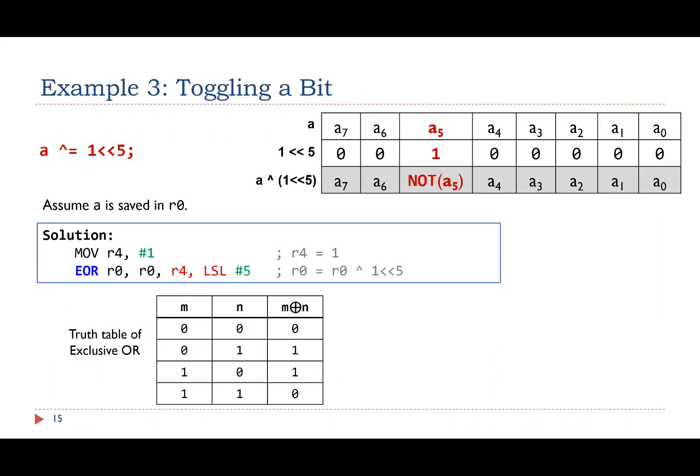The last example shows the assembly solution for toggling bit 5. The solution uses the bitwise exclusive OR instruction EOR. If two bits are the same, the exclusive OR returns 0. If they are different, exclusive OR returns 1. Therefore, if a bit is exclusive ORed with 1, this bit is toggled.